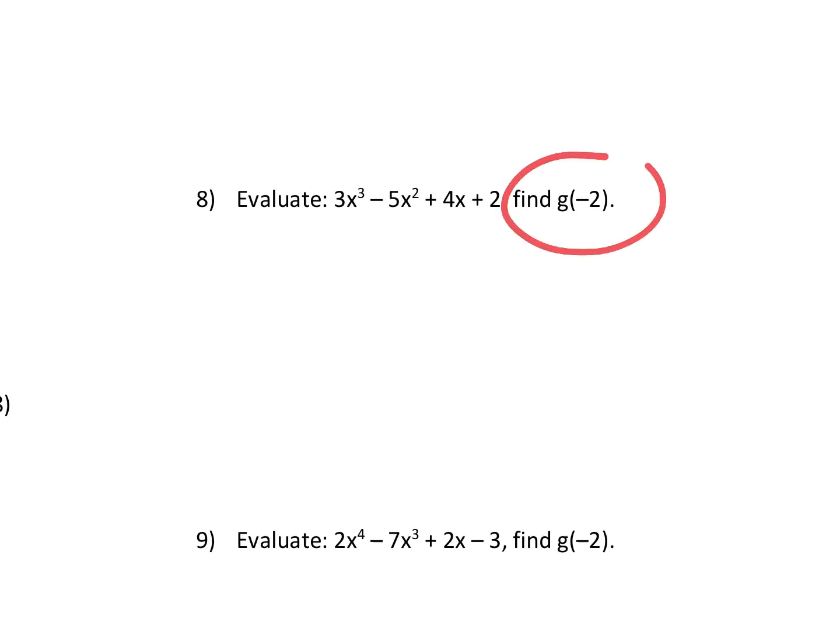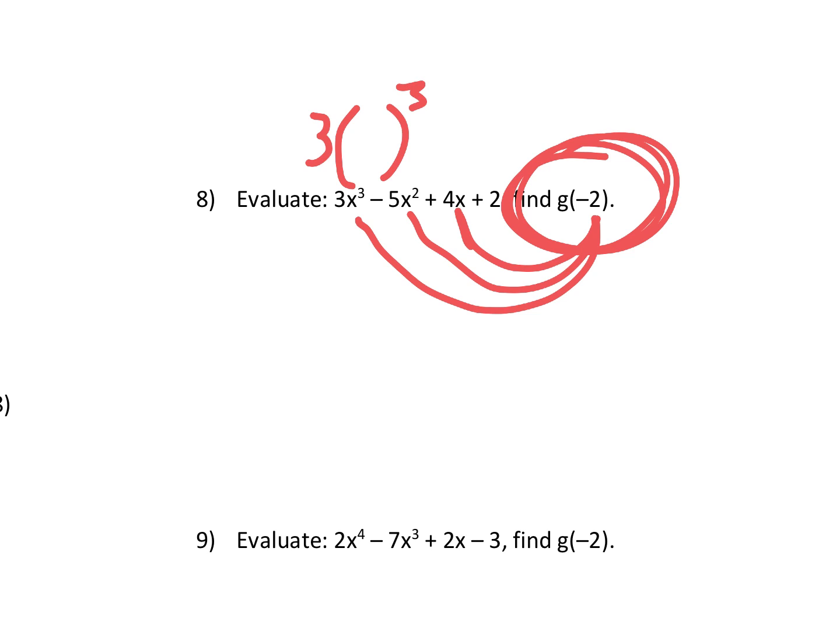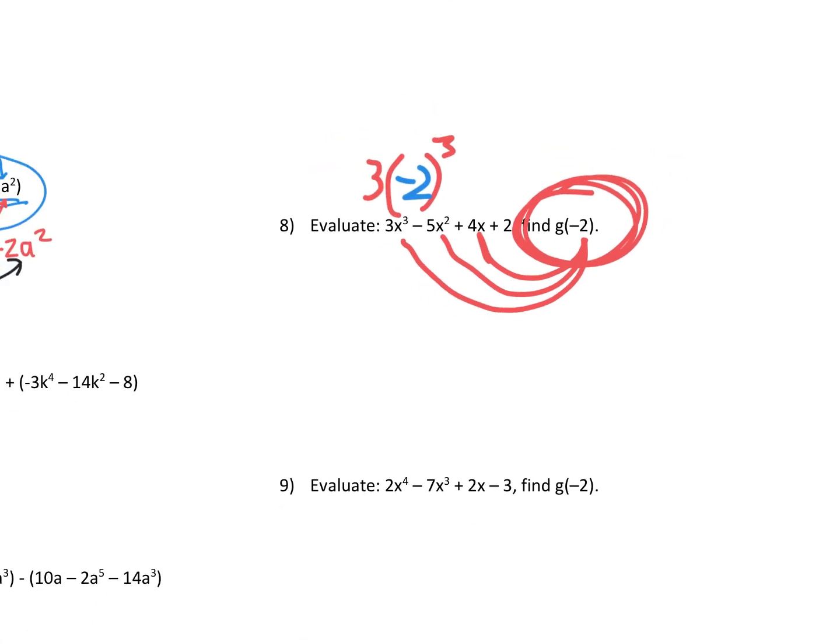When they say find this, that means stick negative two into where all the X's were. And remember that those X's can be thought of as like an empty parentheses. So when you drop a negative two in there, don't forget you're putting it in parentheses. Okay. That's all I got for you for today. So save and close.